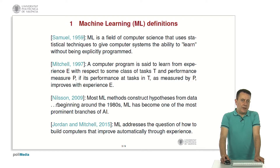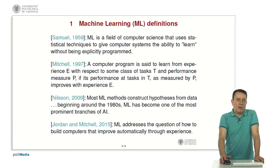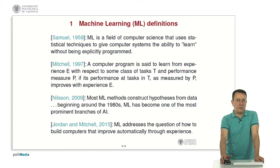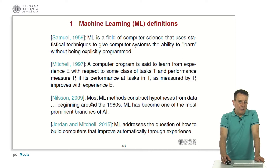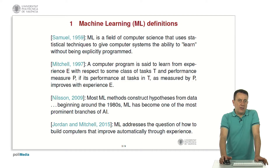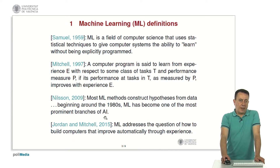More recently, we have a perspective by Nils Nilsson, one of the most prominent researchers in conventional artificial intelligence. Although not being an active part of the machine learning area, he says most machine learning methods construct hypotheses from data, and beginning around the 1980s, machine learning has become one of the most prominent branches of artificial intelligence. He recognizes the importance of machine learning in current AI research and developments.